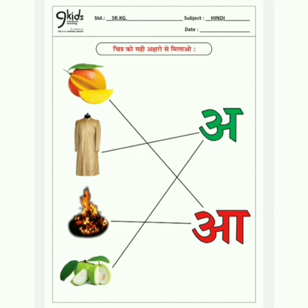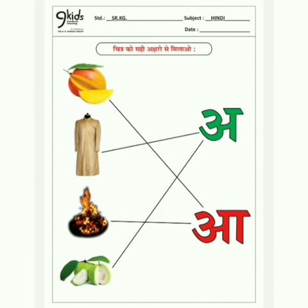Let's check your answers. The first one is aam — आ से आम, so we match it with आ. The second one is achkan — अ से अचकन, so we match it with अ. The third one is aag — आ से आग, so we match it with आ. And the last one is amrut — अ से अमृत, so we match it with अ.